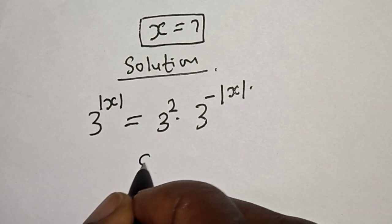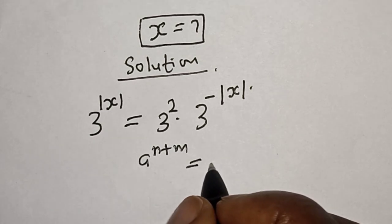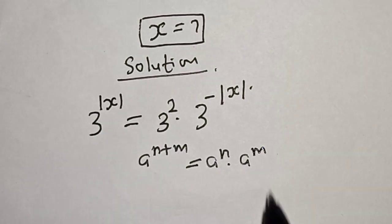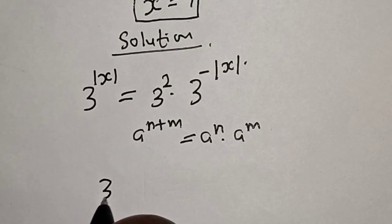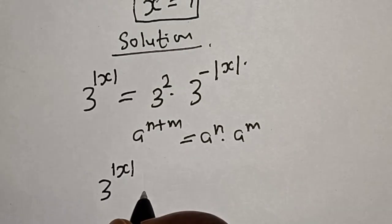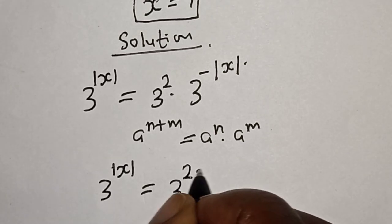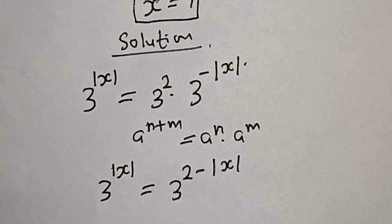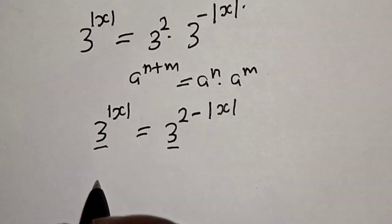Remember this rule: a raised to the power of n plus m is equal to a raised to the power of n, multiplied by a raised to the power of m. So this becomes 3 raised to the power of absolute value of s is equal to 3 raised to the power of 2 minus absolute value of s.